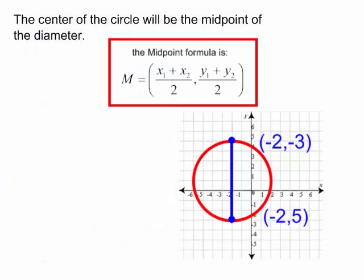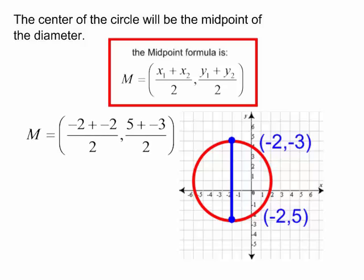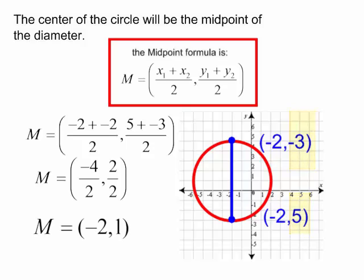The midpoint formula is (x₁ + x₂)/2, (y₁ + y₂)/2. So for my midpoint I will add the x's, divide that by 2. I will add the y's and divide that by 2. The midpoint of this diameter is (-2, 1). And so the center of my circle is (-2, 1).